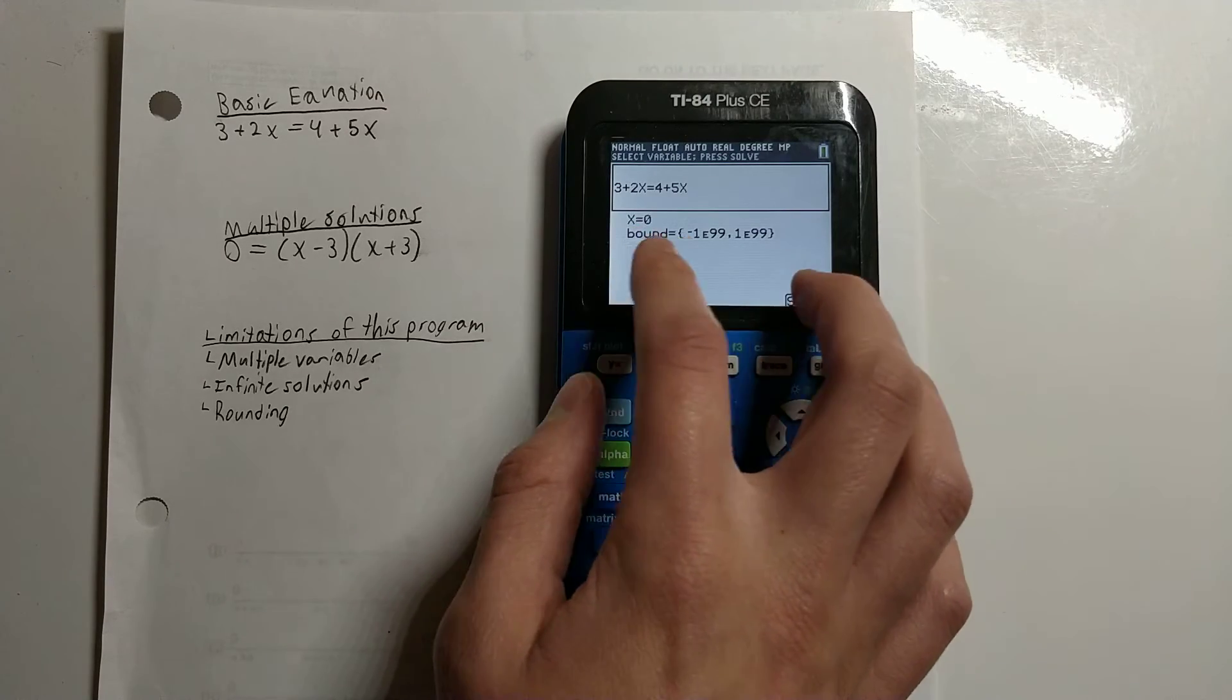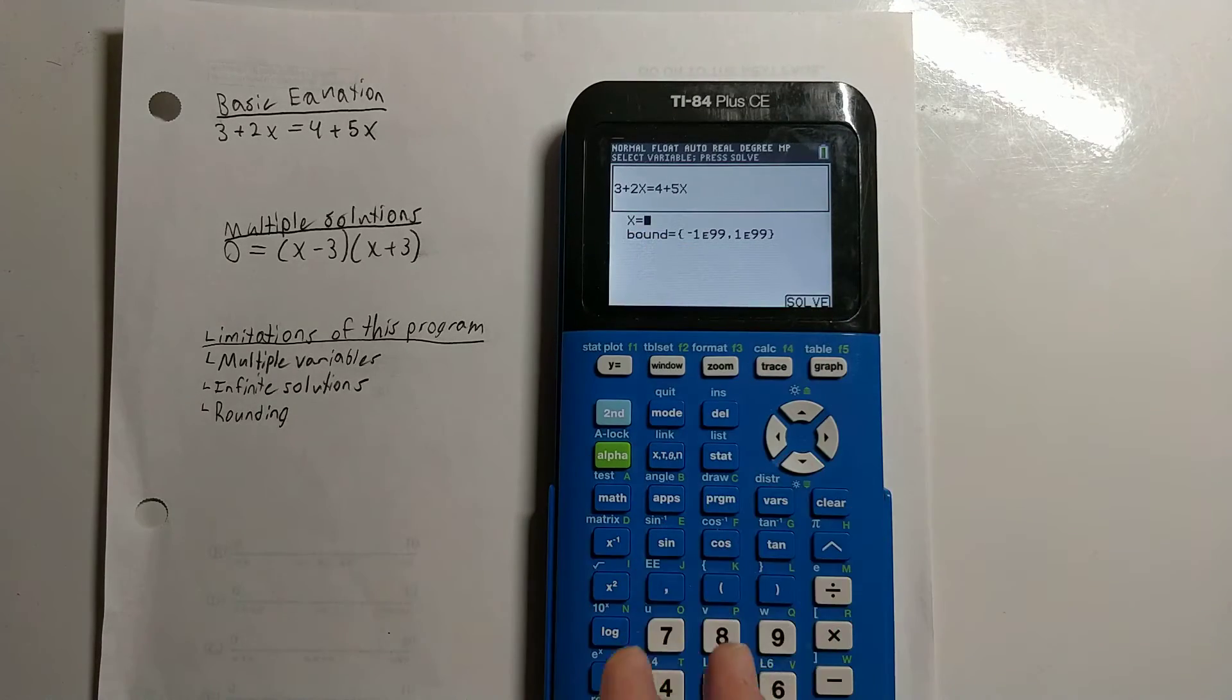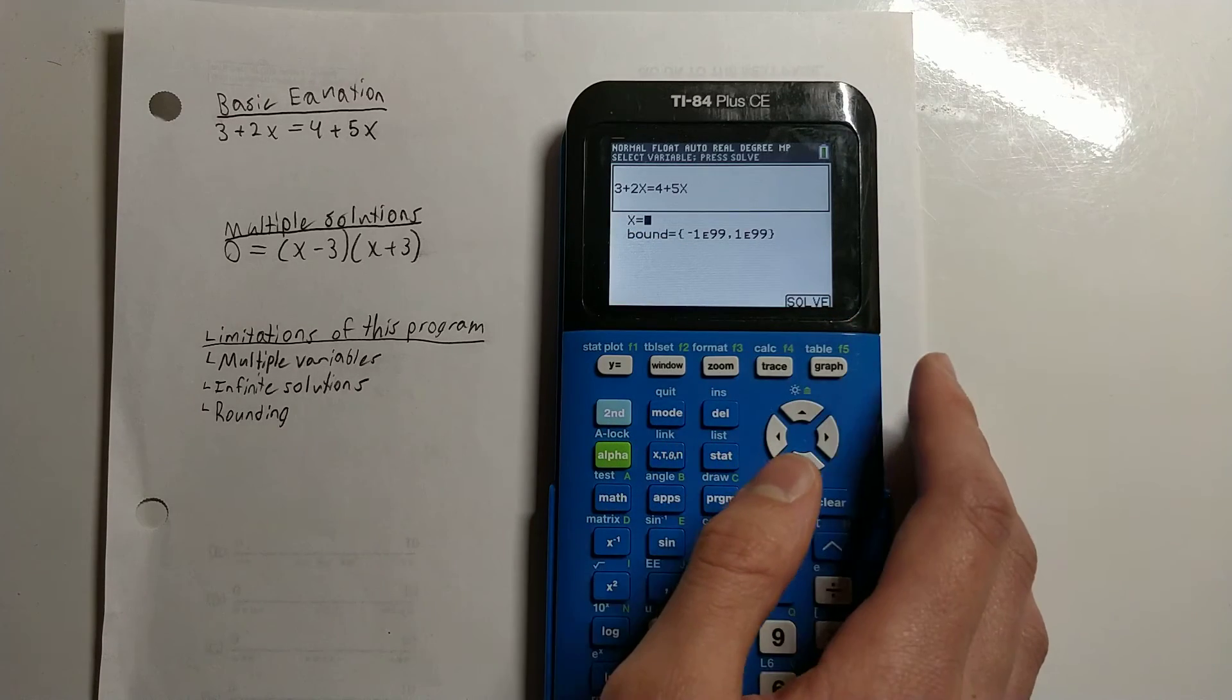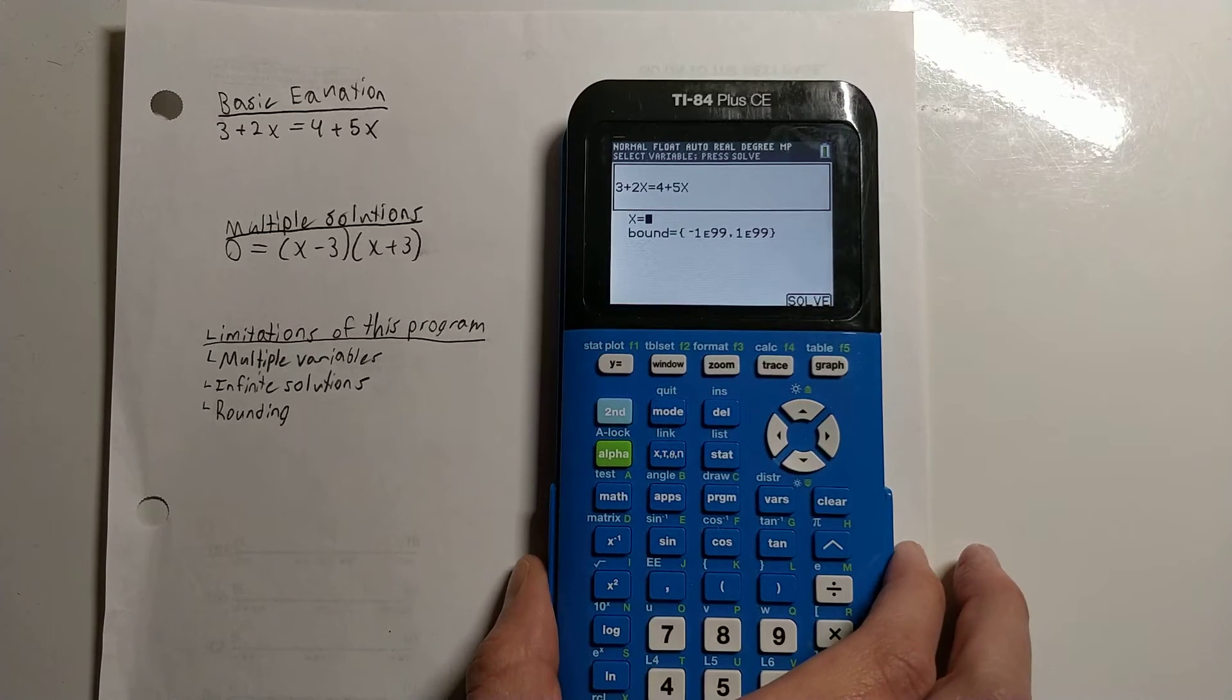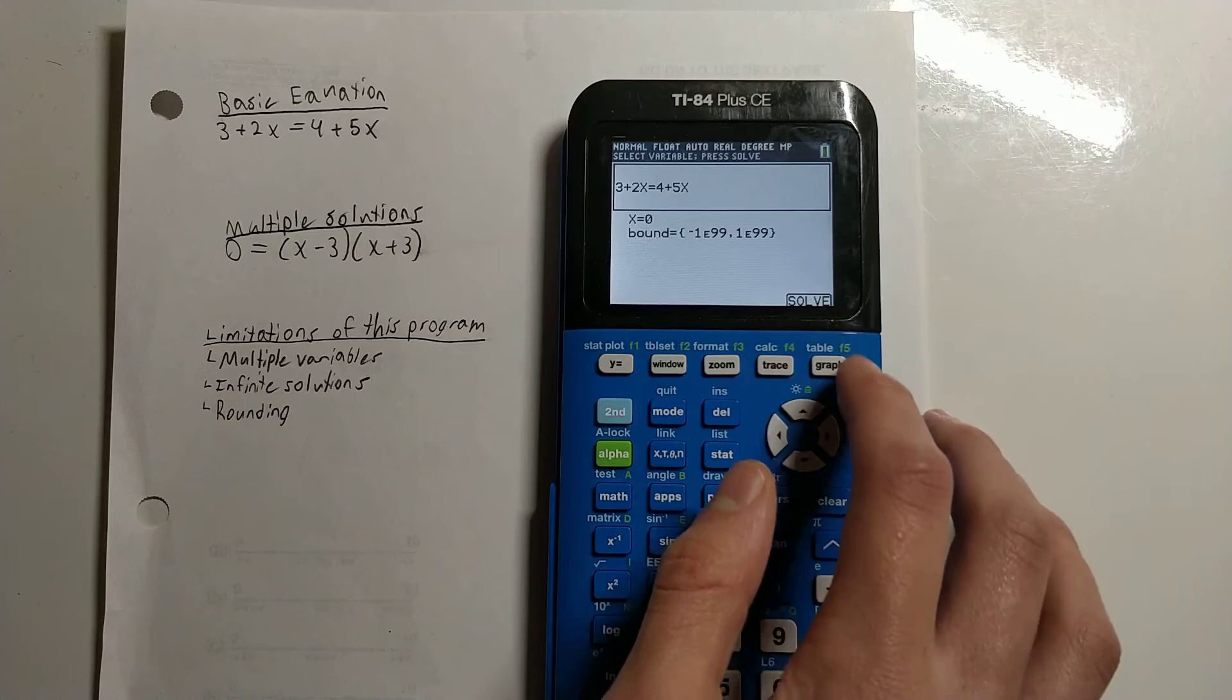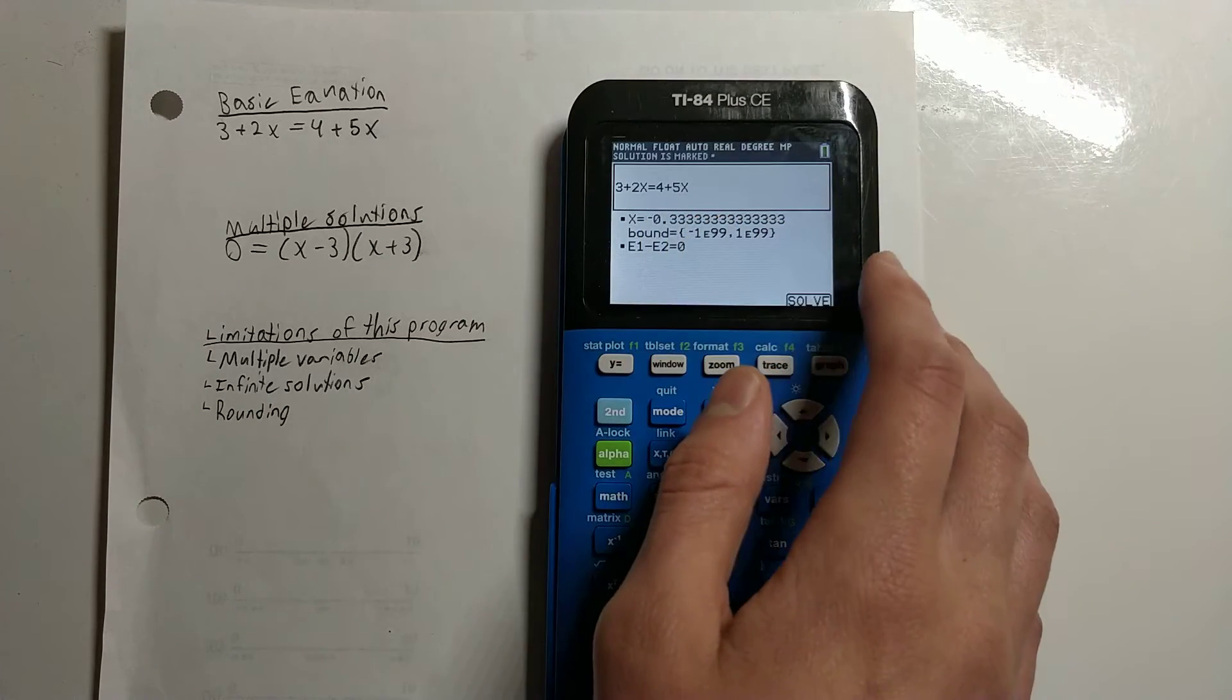Now it will say x equals 0 or x equals some random number. This is not necessarily the right answer. This is just the answer to the previous equation that you solved or whatever value you have stored in x. To actually get the correct answer, press the Solve button here, which is the graph button, and it will tell us that x is equal to negative one-third.